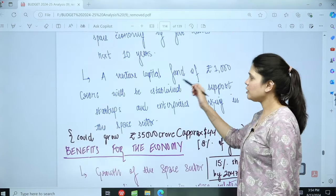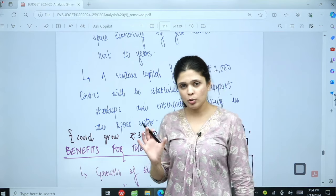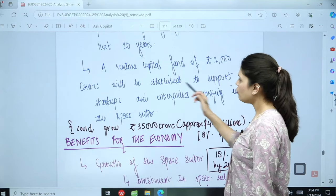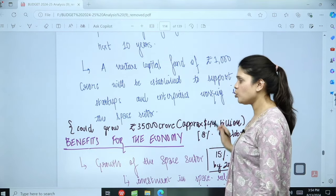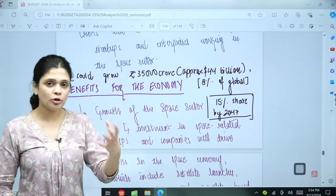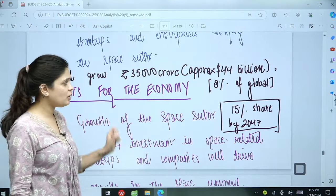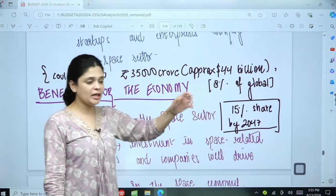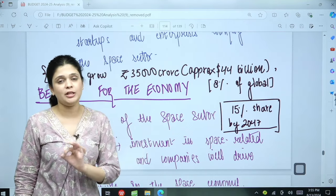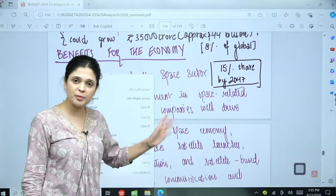A venture capital fund for startups of rupees 1000 crore will be established to support startups and enterprises working in the space sector. If we talk about the expectations that can help India grow, we could grow to around 35,000 crore approximately 44 billion, which will help us make 8% of the global space economy. By 2047, we can actually share around 15% of the global space economy if we move with the same speed and if all the policies are implemented efficiently.